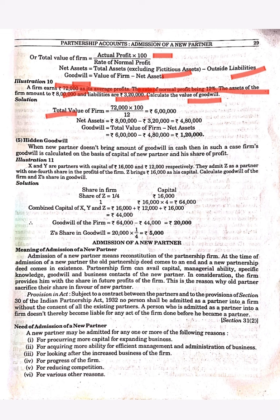Total value of firm = Actual Profit × 100 / Normal Rate of Return = ₹6,00,000. Net Assets = Total Assets − Outside Liabilities = ₹8,00,000 − ₹3,20,000 = ₹4,80,000. Goodwill = Total Value of Firm − Net Assets = ₹6,00,000 − ₹4,80,000 = ₹1,20,000. So this was quite easy.